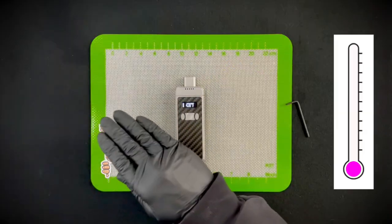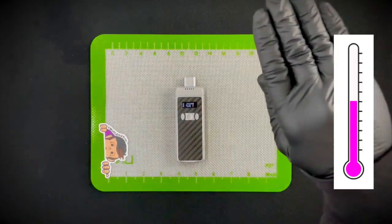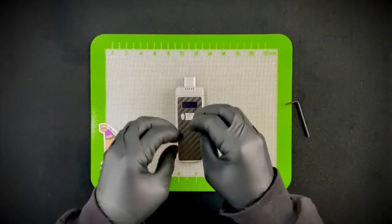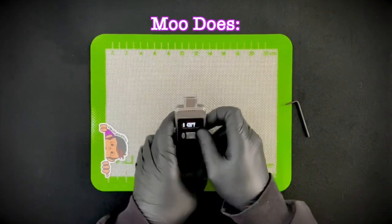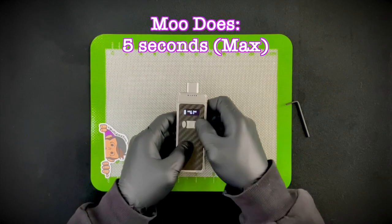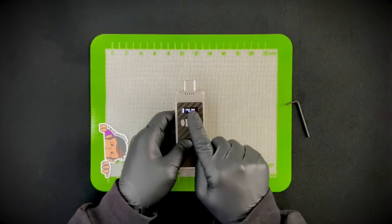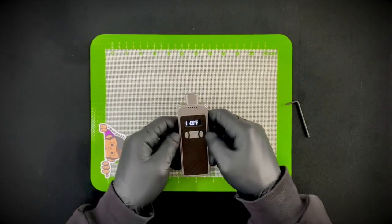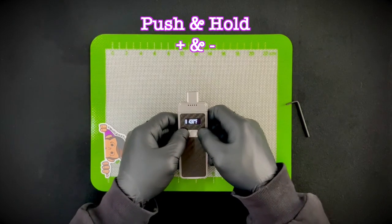Now that really helps for cooking the dab properly. So for me, I always have my heat up time at five seconds, which is the maximum amount of time. The other little Easter egg here is if you push and hold both the plus and minus button, it'll say hold for calibrate.